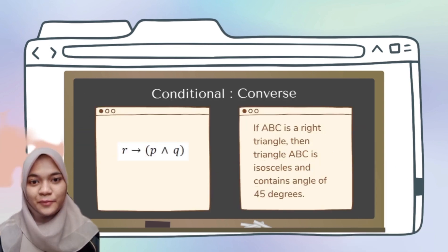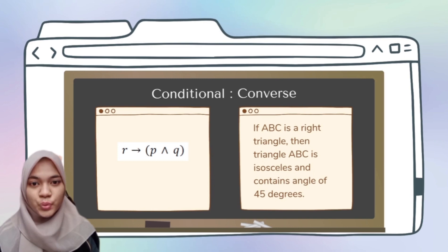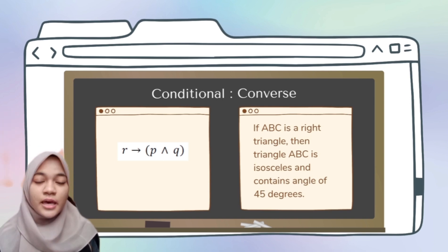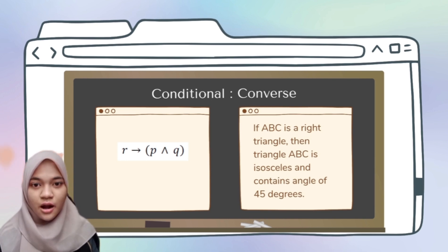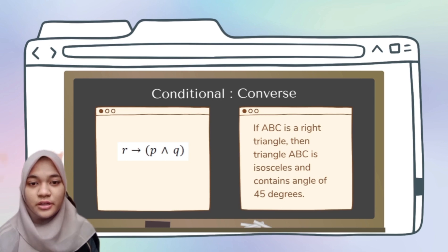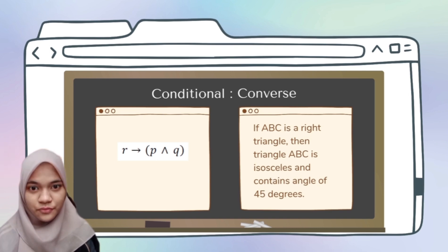The first conditional to explain is converse. For the converse, you have to swap the hypothesis and conclusion — the hypothesis becomes the conclusion and vice versa. In variable form, the answer is R → (P ∧ Q). In sentence form: 'If ABC is a right triangle, then triangle ABC is isosceles and contains an angle of 45 degrees.'